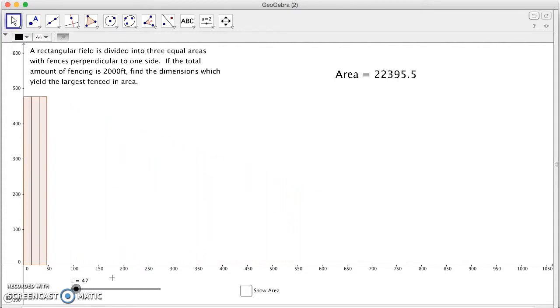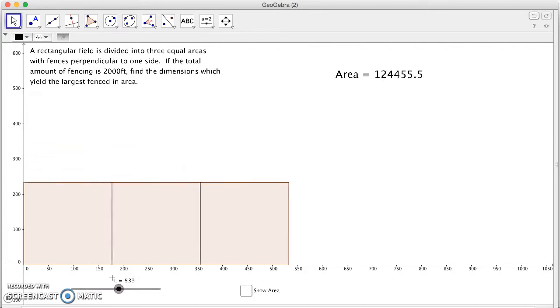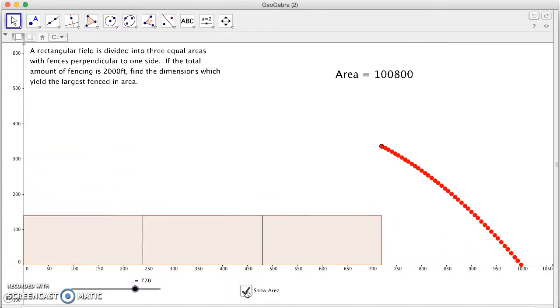As it gets too skinny and real long, there's basically no area. And on the other side, we also have essentially no area. Now I can actually plot the area of this thing.